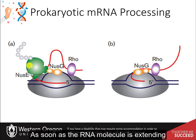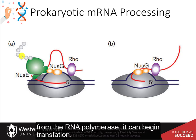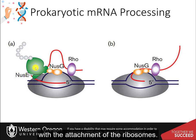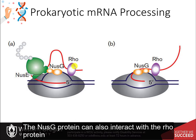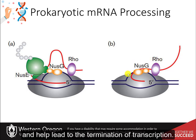As soon as the RNA molecule is extending from the RNA polymerase, it can begin translation with the attachment of the ribosomes. The NUS-G protein can also interact with the Rho protein and help lead to the termination of transcription.